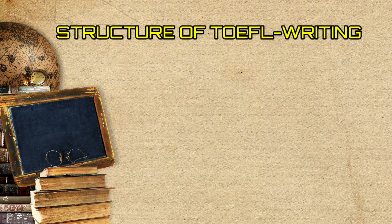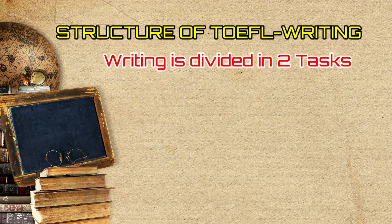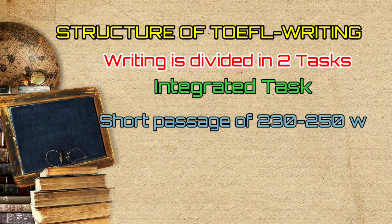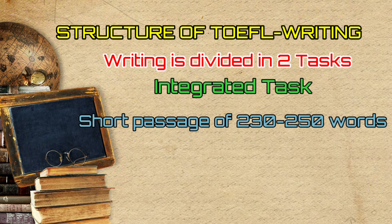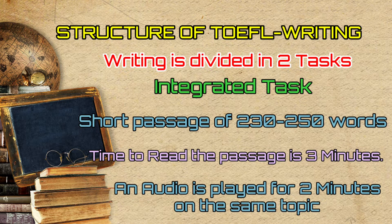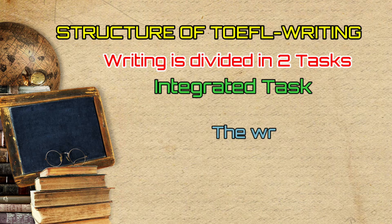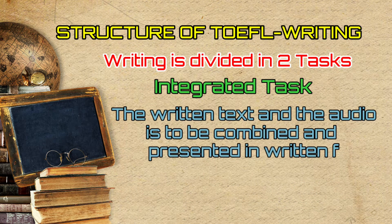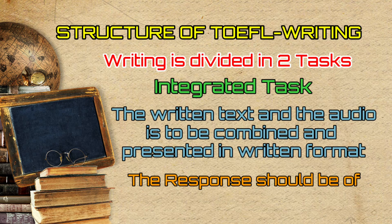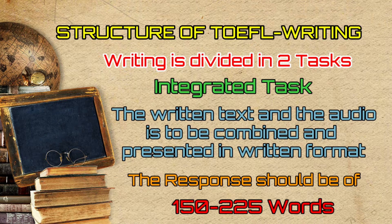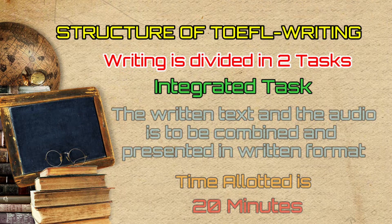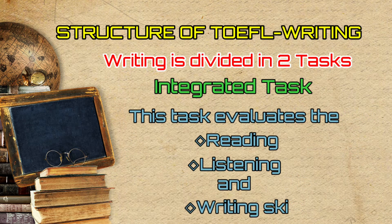TOEFL Writing: The writing section comprises of two tasks. The first one is the integrated task, where a short text of around 230 to 250 words is given. Three minutes of reading time is allocated, followed by an audio which is played discussing the same topic for two minutes. The student is expected to combine the content of the written text and the audio and present it in written format. The length of the response should be between 150 to 225 words and the task must be completed within 20 minutes. This task evaluates the reading, listening, and writing skills.